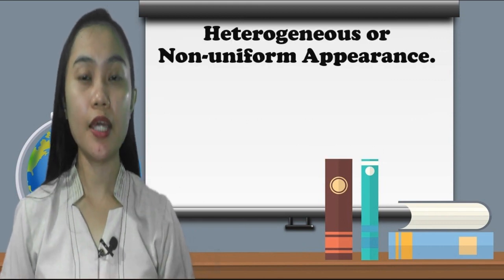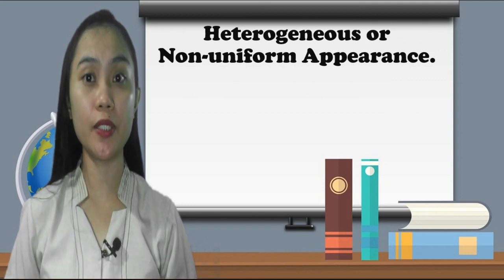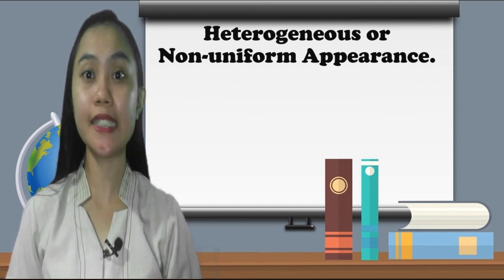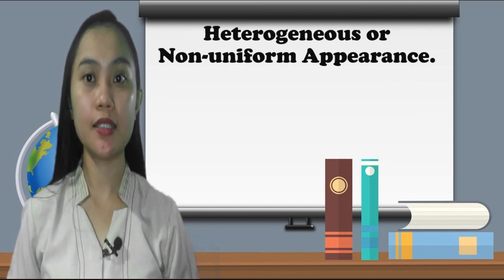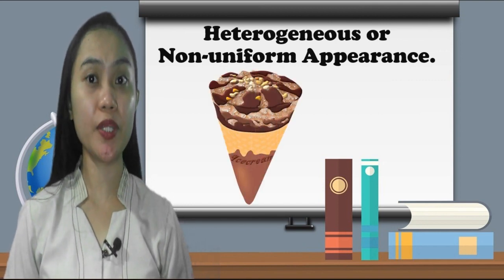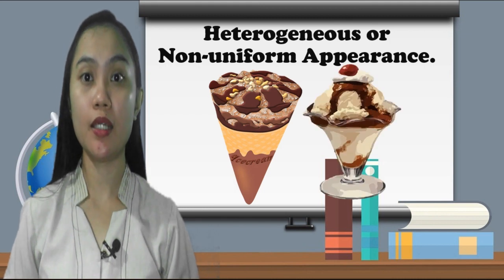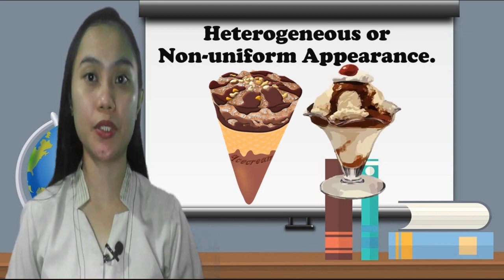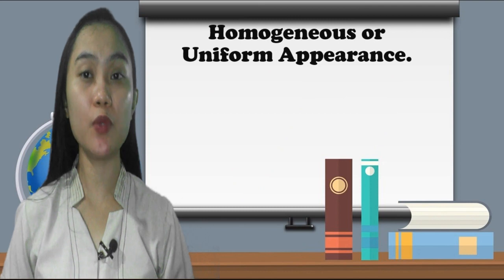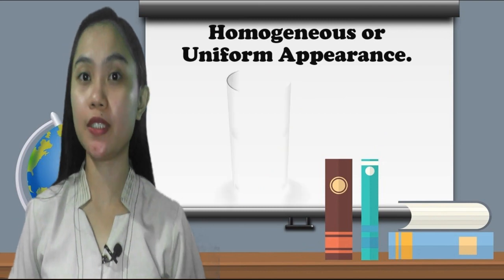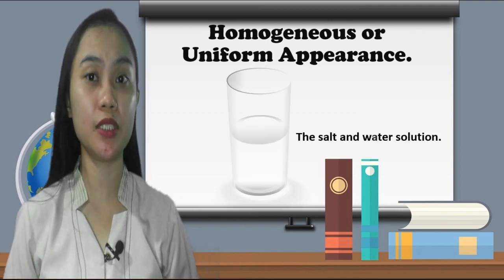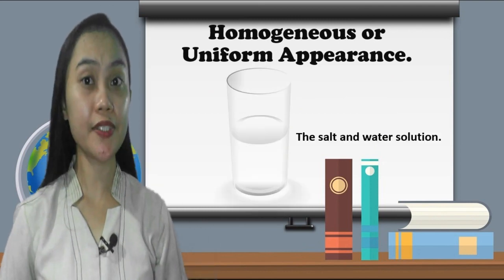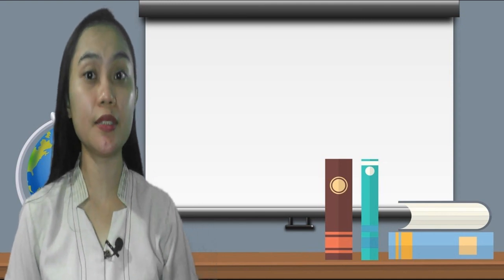Examples of uniform (homogeneous) and non-uniform (heterogeneous) systems: ice cream with nuts and marshmallows is a heterogeneous mixture, while a salt and water solution is a homogeneous mixture. Now let's look at a comparison between homogeneous and heterogeneous mixtures.